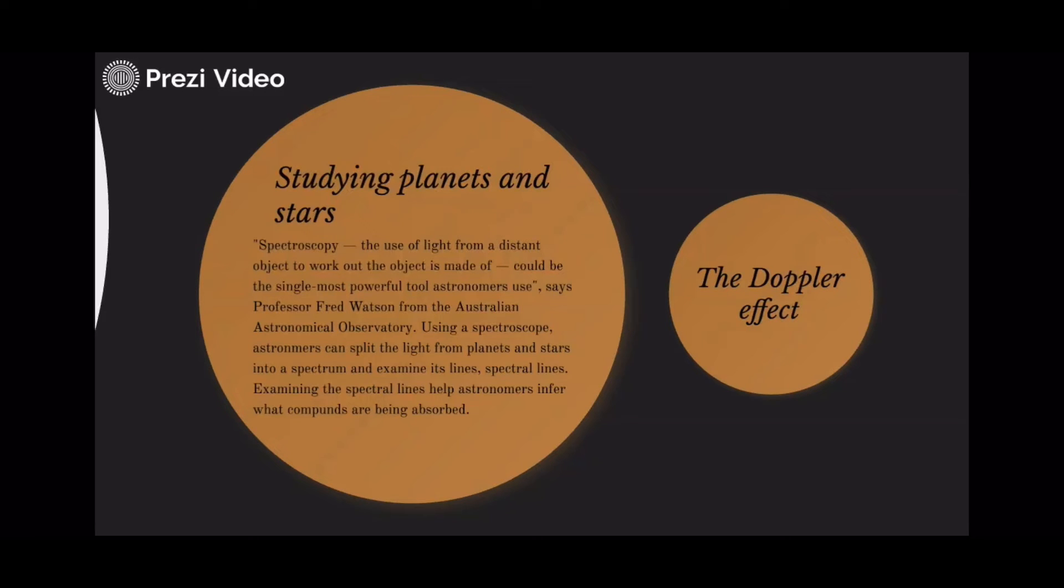Using a spectroscope, astronomers can split the light from planets and stars into a spectrum and examine its lines, spectral lines. Examining the spectral lines helps astronomers infer what compounds are being absorbed.